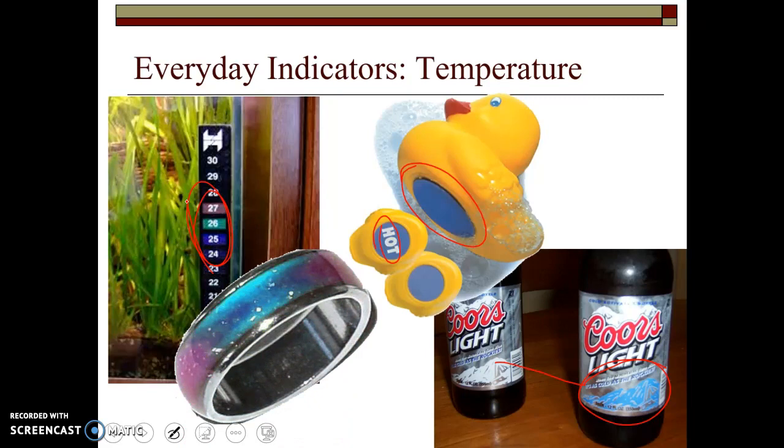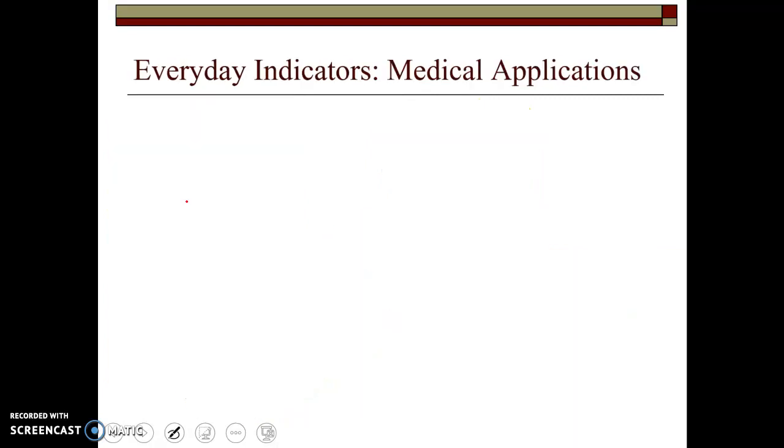Of course, most of us are probably familiar with mood rings, which probably don't really indicate mood. They probably do respond either to the type of light that's hitting them or to a temperature issue. You know, maybe when you're angry, you get a different color, and so a different color appears on the mood ring. So those are just some examples of some indicators where we use.